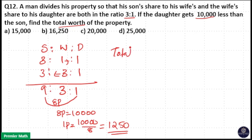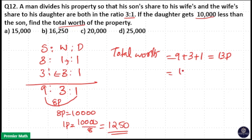The total worth is equal to 9 plus 3 plus 1 parts, that is 13 parts. 13 parts is equal to 13 into 1,250. 13 into 0 is 0, 13 into 5 is 65, so 5 comes here and 6 carries over.